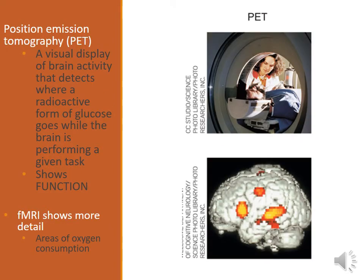PET scans and fMRIs are our functional scans — they let us see the brain as it is being active. Your brain is about three pounds, and in respect to your overall body weight, it's maybe about 1% of your total weight. But that minimal percentage takes on 20% of all the oxygen and 20% of all the glucose that your body utilizes — glucose being essentially the energy source your body uses to keep itself functioning. PET scans and fMRIs work off of these things.